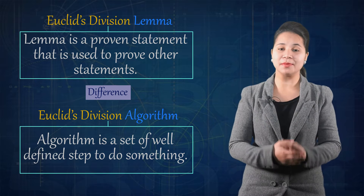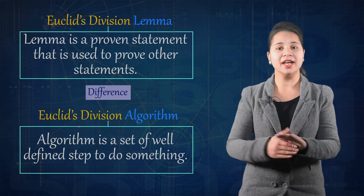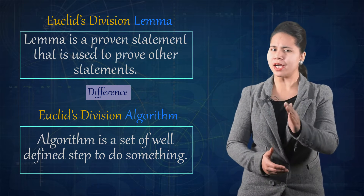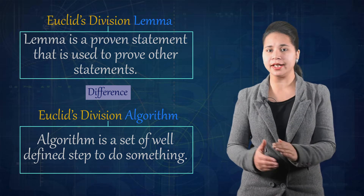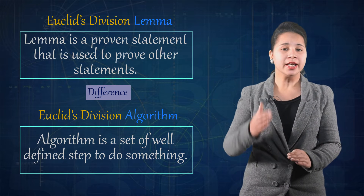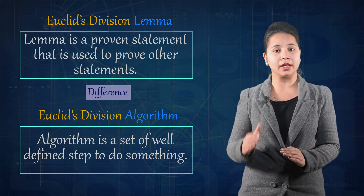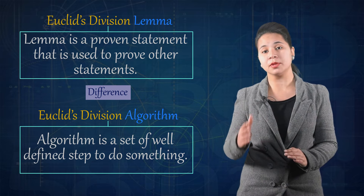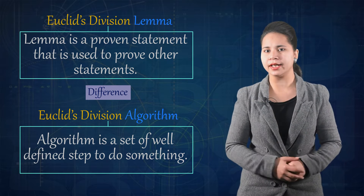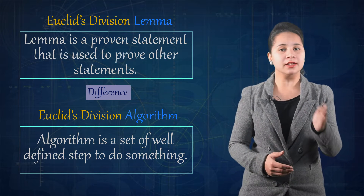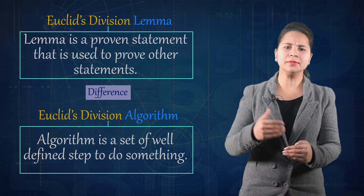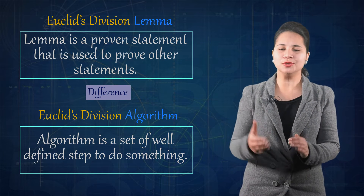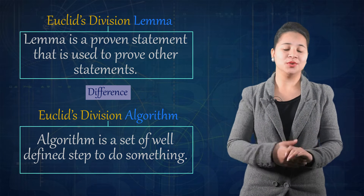For example, in this lecture we are studying finding HCF by using Euclid division algorithm. We are studying how Euclid division lemma is used step by step — that is, how Euclid division algorithm is applied. So a lemma is a proven statement, and an algorithm is nothing but a well-defined set of steps used to find out the HCF.